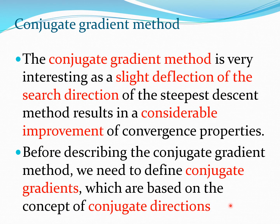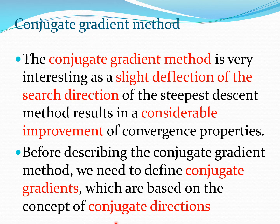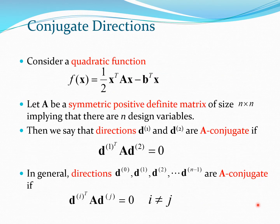The conjugate gradient method does a slight deflection of the search direction of the steepest descent method, and this small deflection results in a considerable improvement in convergence properties. Before describing the conjugate gradient method, we will spend some time discussing what is meant by the word 'conjugate,' which comes from the concept of conjugate directions. We will see why this conjugate direction property is very important for the conjugate gradient method.